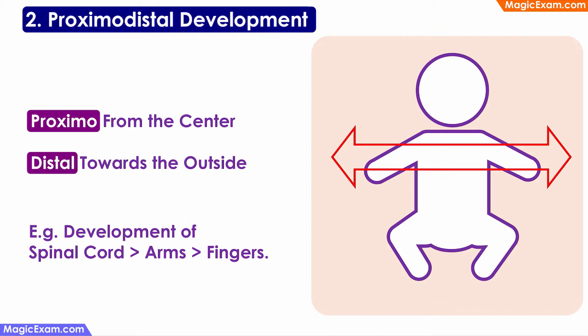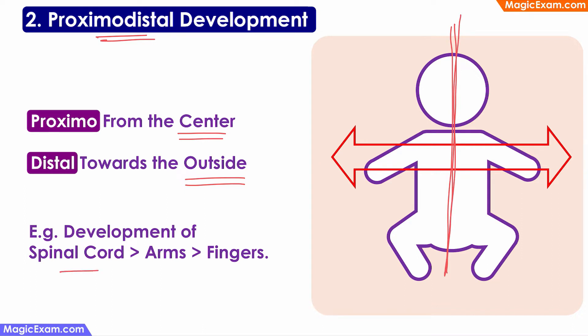The next principle is proximodistal development. Proximo means from the center and distal means towards the outside. This principle says that development of a child happens from the center of the body and moves towards the outside. For example, the spine is one of the first organs to develop, and the development of the arms and legs happens after the spine has developed to a certain extent. The spinal cord has to develop first for the baby to control the arms and legs. After the arms develop, the baby can move the arms, and only later can the baby move the fingers. Development starts from the middle and goes towards the outer parts of the body. This is proximodistal development.